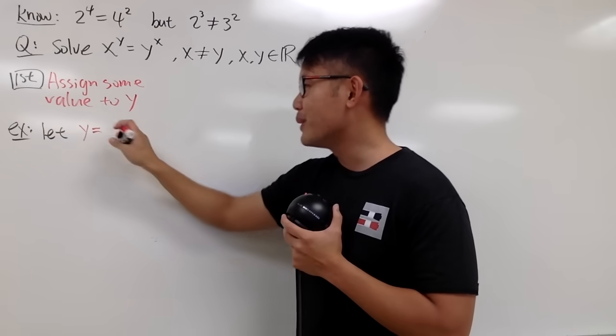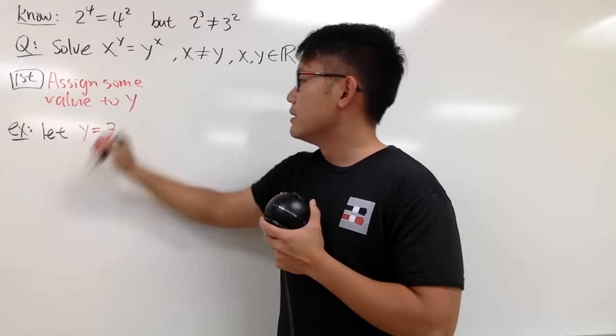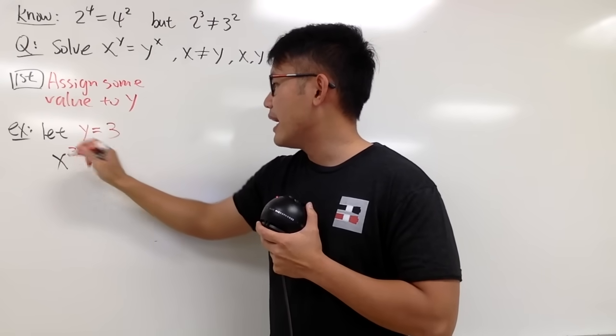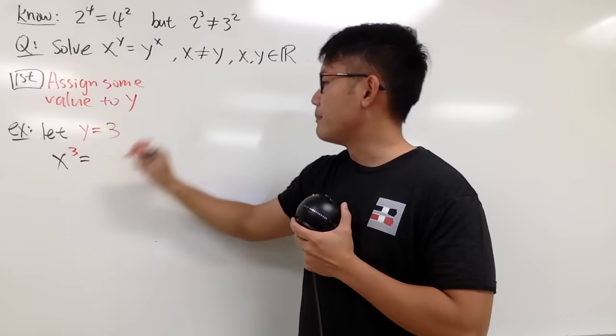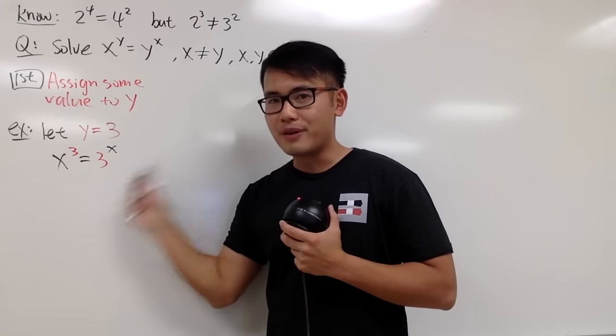I'm going to let y equal to 3. And I will get x to the third power, because y is 3 now, and that's equal to 3 for the base, and x is still x, like this.